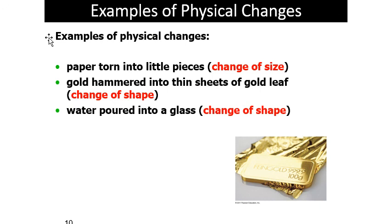Now I'm going to give you a couple of examples of physical changes. An example of physical change: if you change the size, you still have the same substance, so we call that a physical change. Change of shape — if you change shape you still have the same substance — so physical changes can change the size, shape, or any other physical properties.